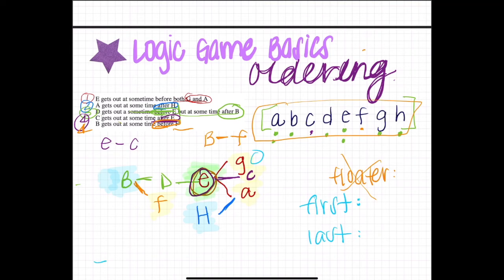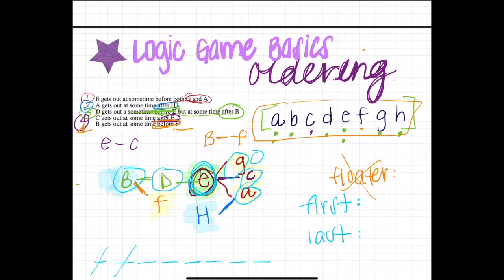What is the earliest and latest E could go? With eight spots, count how many letters must come before E — that's D and B, so E can't go first or second. Then count how many must come after — G, C, and A must follow E, so E can't go in the last three spots. Therefore E can only go third, fourth, or fifth.